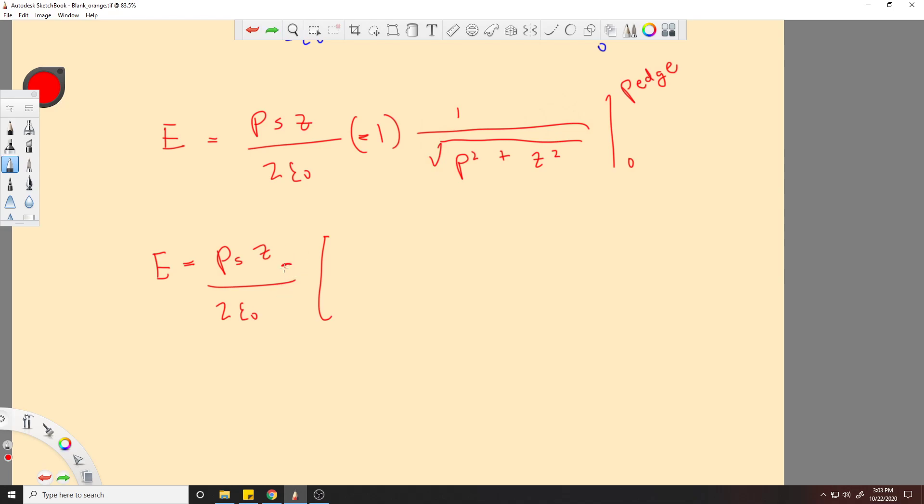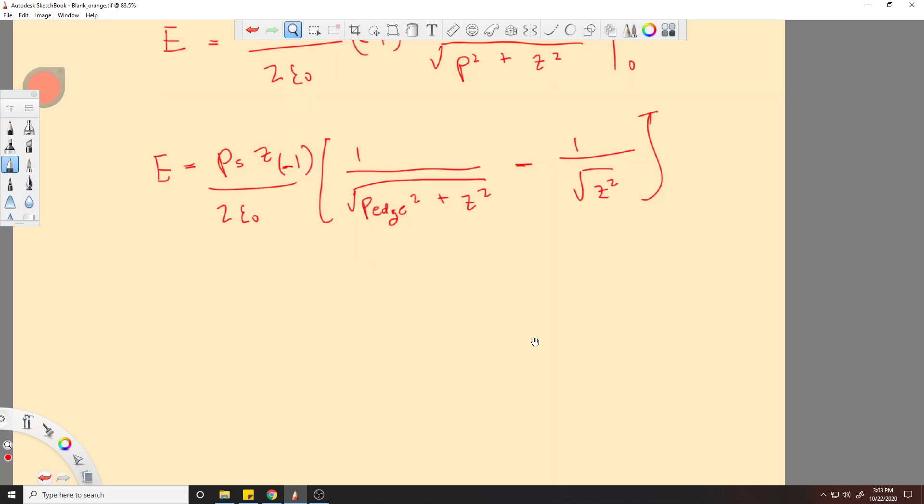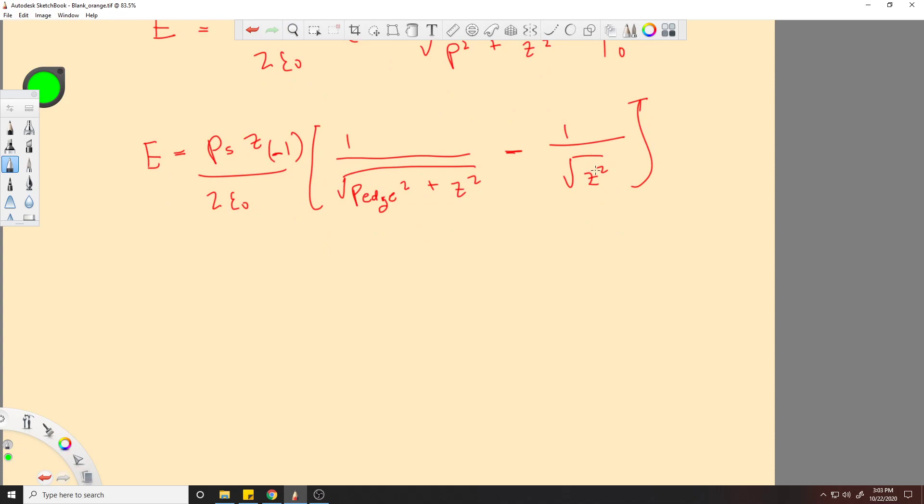I'll leave this negative one here still. So 1 over rho edge squared plus z squared minus 1. This rho will go to 0. So let's put this z squared. That'll turn to a z, right? So this cancels at this. That'll turn to a z.